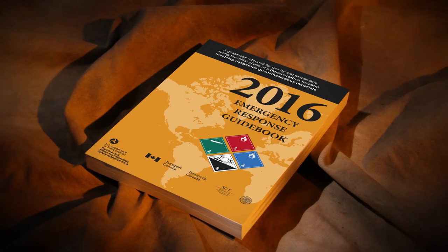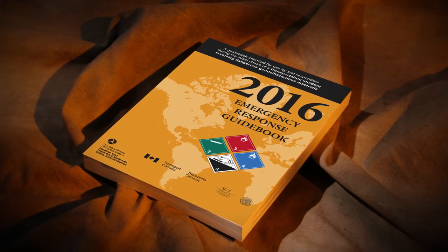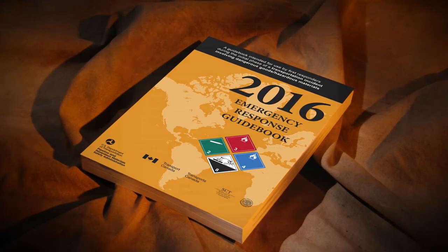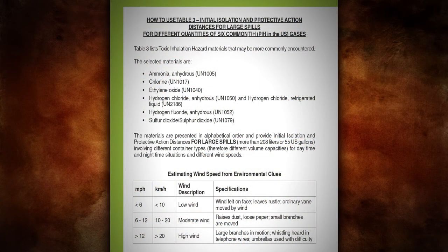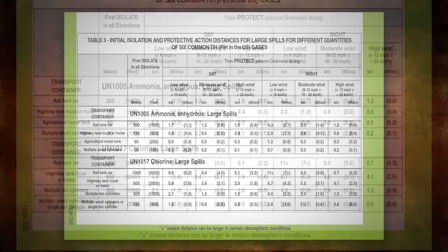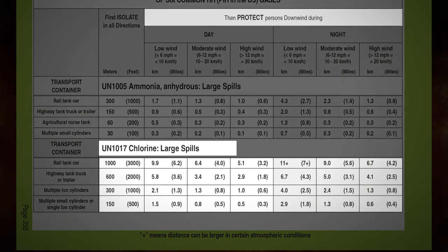The guidebooks are typically revised every four years. The current version includes a table that provides emergency responders with Protect Downwind Distances for six Toxic Inhalation Hazard, or TIH, chemicals. Chlorine is one of these chemicals.